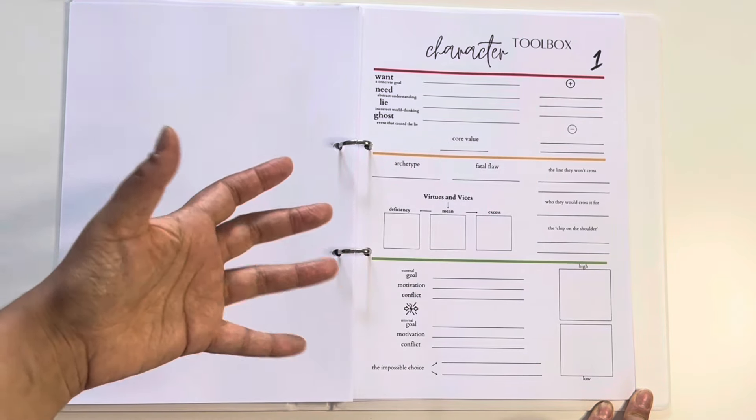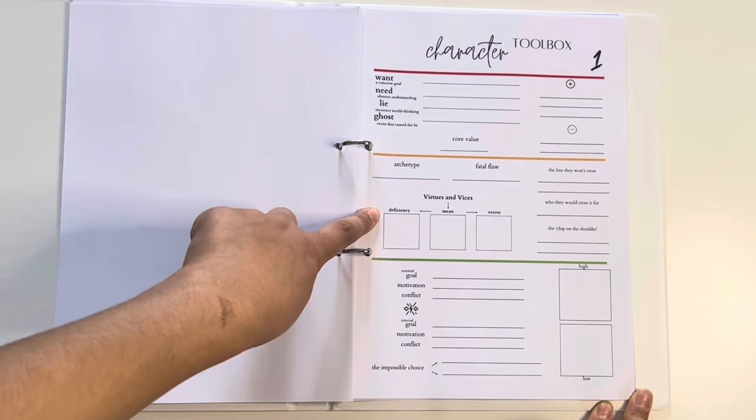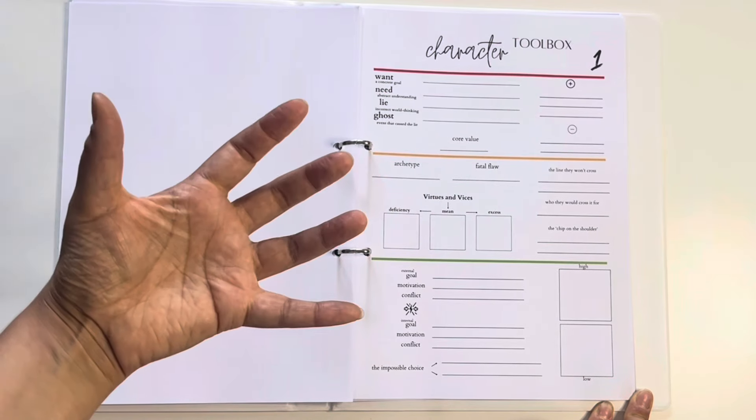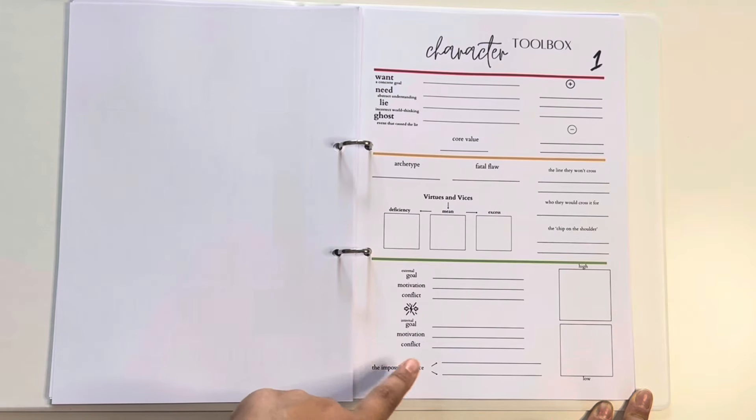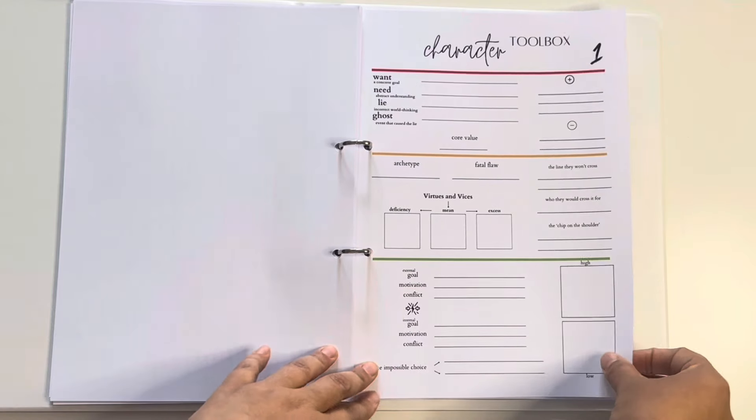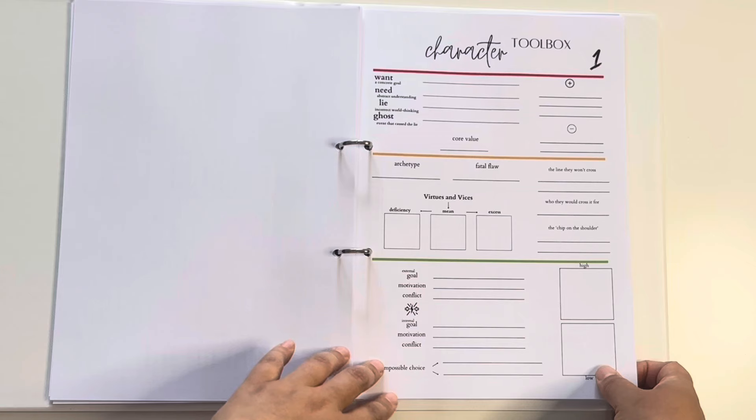And then depending on how I'm feeling, I could add more depth. And then if I'm feeling absolutely fantastic, I can again, add more depth. And with the character toolbox, I would prefer these done before I started writing.